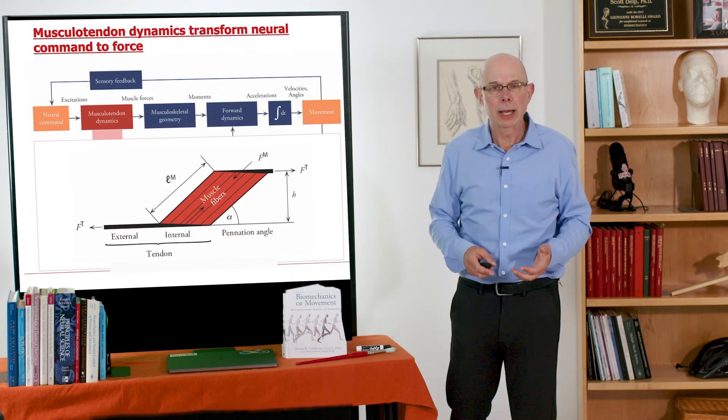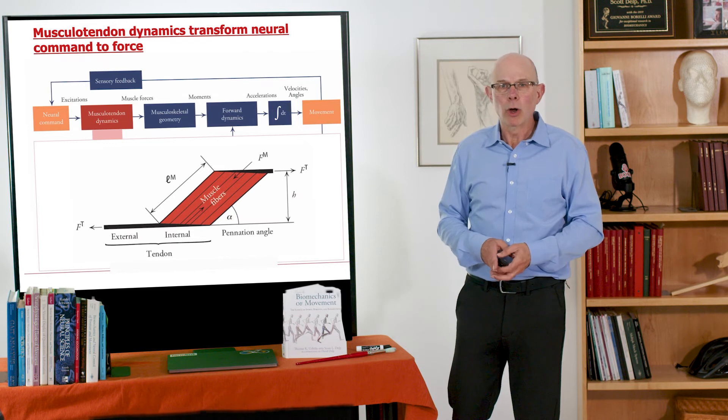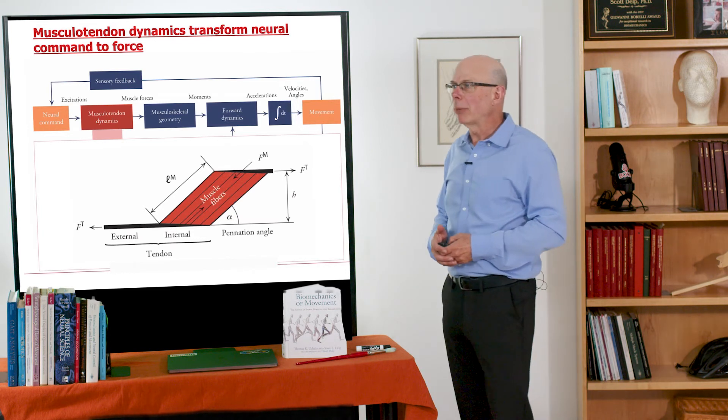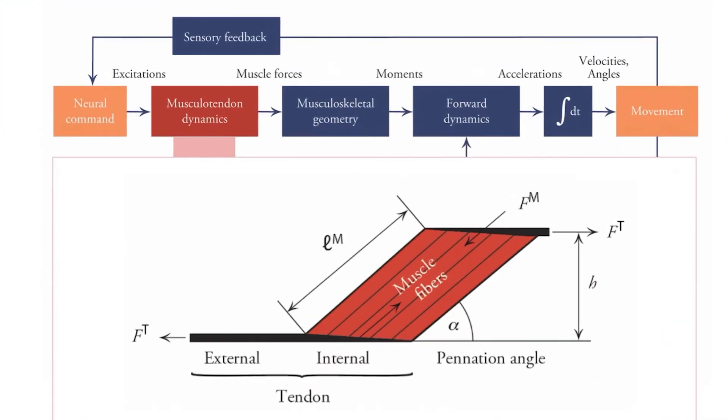So how does this fit into our overall study of biomechanics of movement? We saw that we move by neural commands that are initiated in the nervous system. We focused on modeling muscle tendon dynamics. Now we're moving to musculoskeletal geometry and moment arms are the basic measure of geometry of the musculoskeletal system.